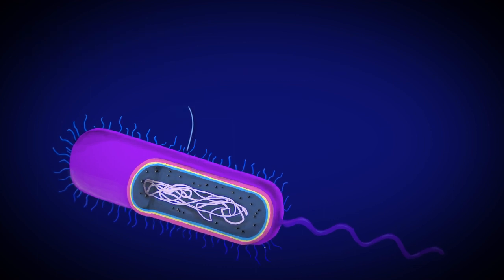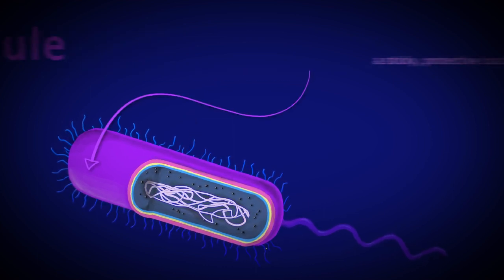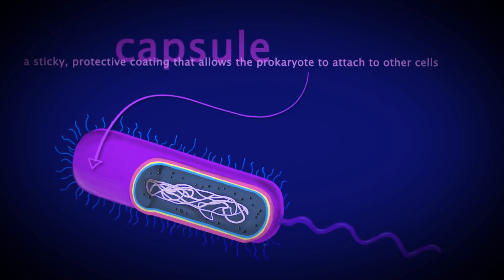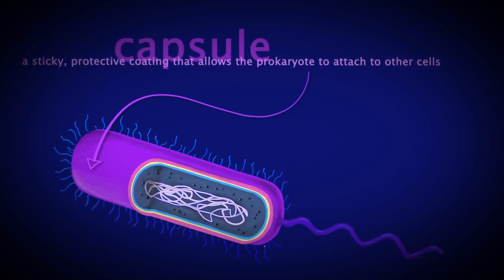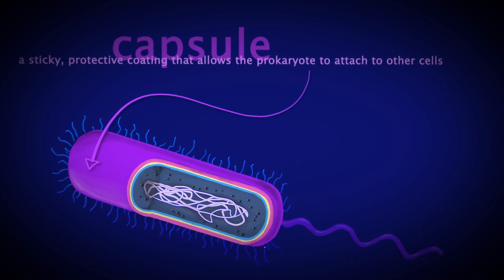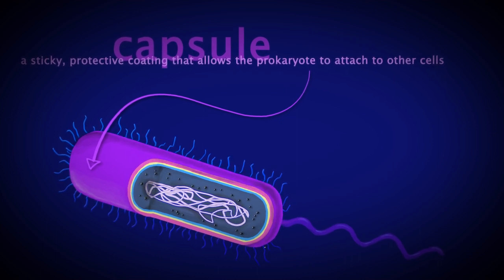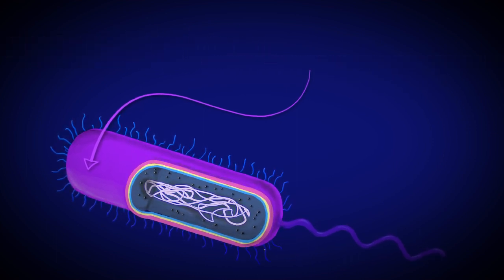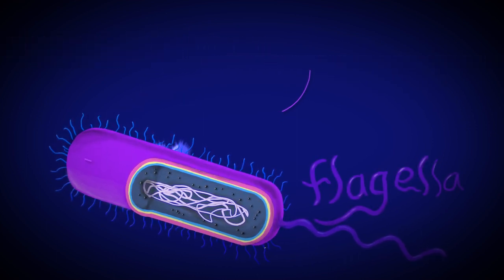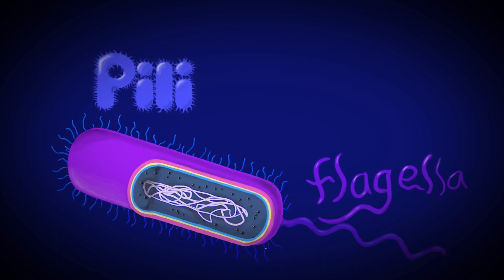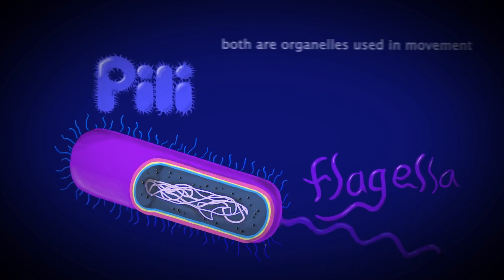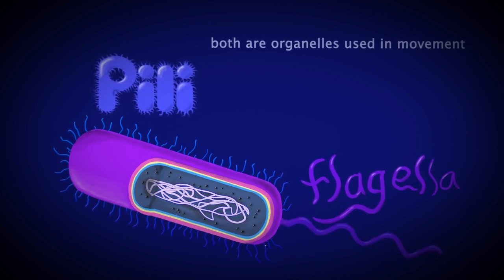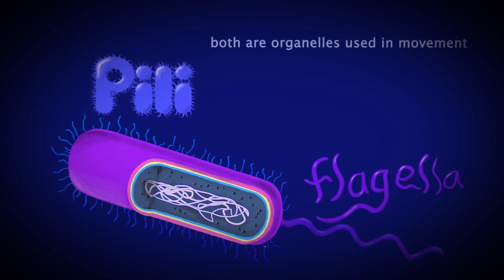On the outermost layer of some prokaryotes, there is a waxy coating called a capsule that protects the cell and can help the cell stick to other surfaces. Some prokaryotes have flagella or pili. These organelles allow the cell to move around and transfer DNA.